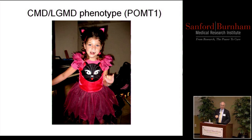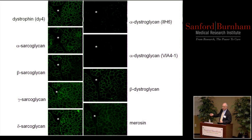This is a biopsy from that little girl. The components of the complex — dystrophin, sarcoglycans — all look normal, so if this were a Duchenne patient it would be completely negative. Dystroglycan is present; merosin is present. But with 2H6 staining, there is some staining so it's not completely null — that's probably why she has the mild phenotype. With 6A4-1 it doesn't appear to have any staining, so there's probably a slight difference there.